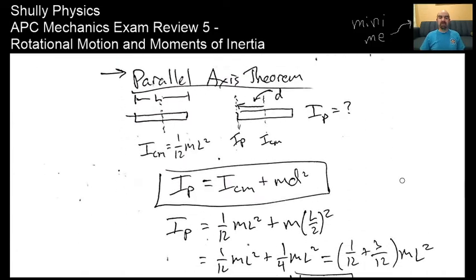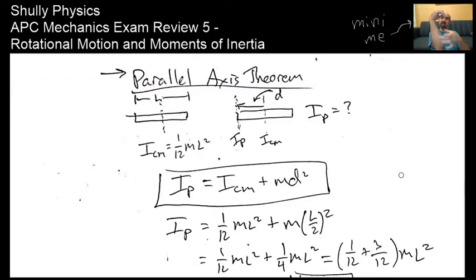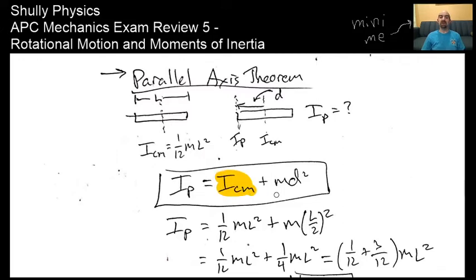Parallel axis theorem: what if you're given a moment of inertia about some object's center of mass, but you need the moment of inertia about a different axis—like hanging an object from a pivot and allowing it to swing? With the moment of inertia about the center of mass, you can use the parallel axis theorem. As long as the new axis is parallel to the center-of-mass axis, all you do is take the object's mass and multiply it by the square of the distance between the center of mass and that parallel axis.